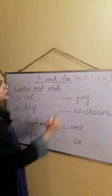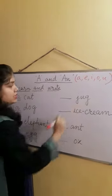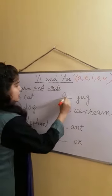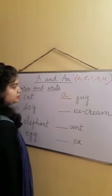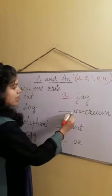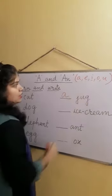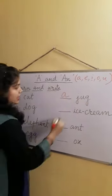Jug - J-U-G, jug. J is not a vowel, so we will write A. A jug.